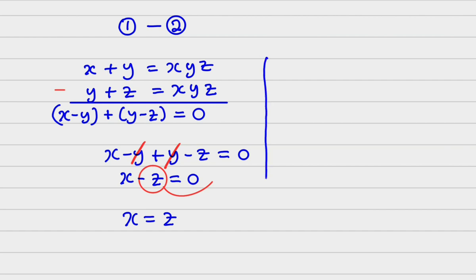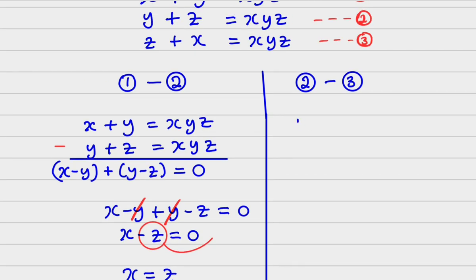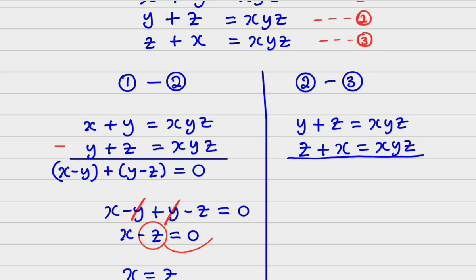Let's go back to the second thing that we are going to do. Why not subtract equation 3 from 2. So, we have equation 2, then minus equation 3. Equation 2 is y plus z is equal to xyz. Then, we have z plus x is equal to xyz. Now, remember, we are subtracting. So, this is going to be y minus z, then plus z minus x, and this is equal to 0.